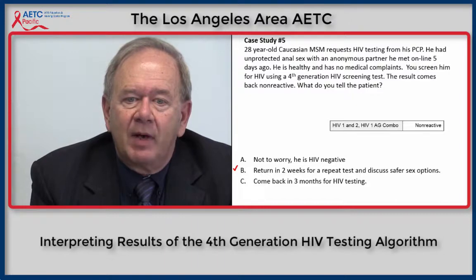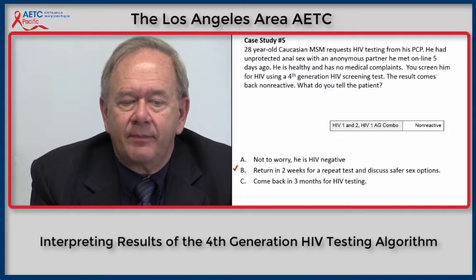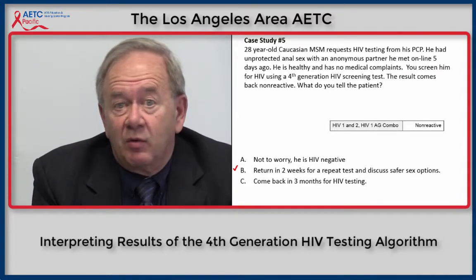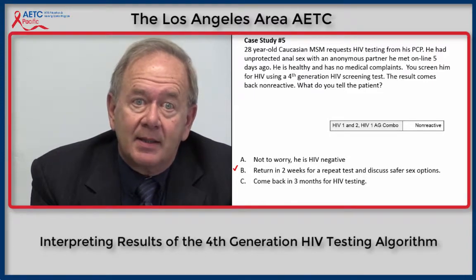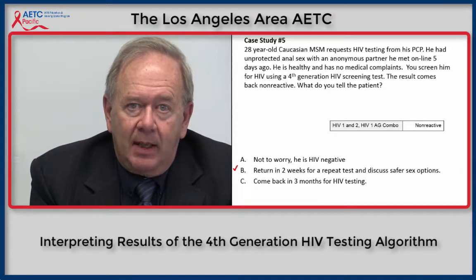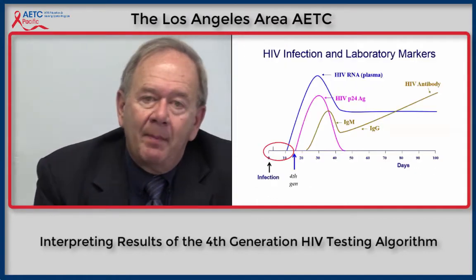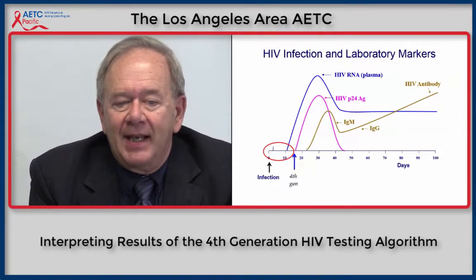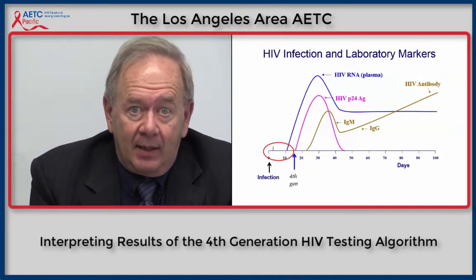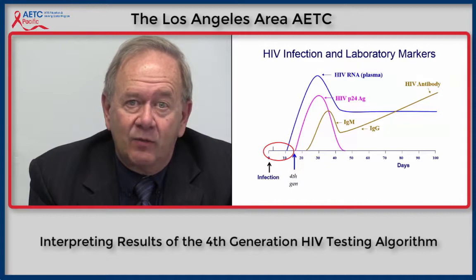Case study five: a 28-year-old Caucasian man who has sex with men requests HIV testing from his primary care provider. He had unprotected anal sex with an anonymous partner five days ago. He's healthy with no medical complaints. You screen him using the fourth-generation HIV screening test and his result comes back non-reactive. The correct answer is B — he should return for a repeat test in two weeks and discuss safer sex options. Since his last high-risk contact was only five days ago, and the window period for the fourth-generation test is 10 to 14 days, it is possible he acquired HIV but the test has not yet turned positive. In the meantime, he should behave to prevent possible transmission.